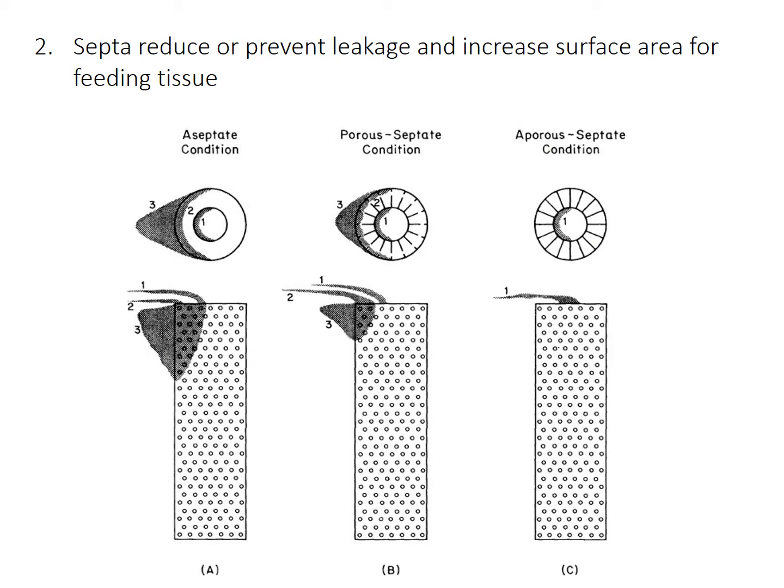So why do archaeocyaths have septa? The experiments found that the aseptate model suffered from a lot of leakage, where water seeped out of the sides rather than out of the top of the central cavity — illustrated here with dark patches showing water movement indicated by dye. That leakage reduced the speed of the water cycle, meaning less food-bearing water traveled through the body. The presence of septa reduced leakage, especially when the septa were aporous or solid, leading to more efficient and faster feeding currents. The septa also probably provide additional surface area for soft tissue, which contains feeding cells.